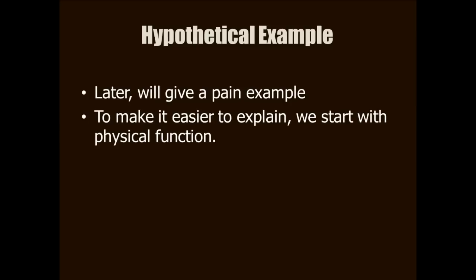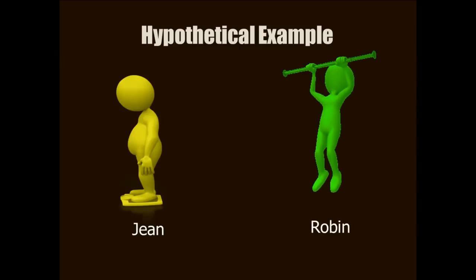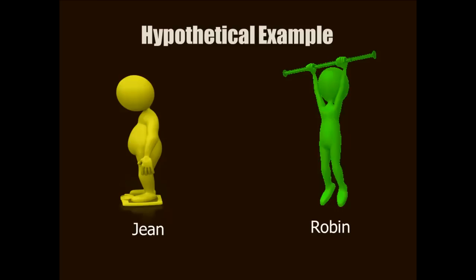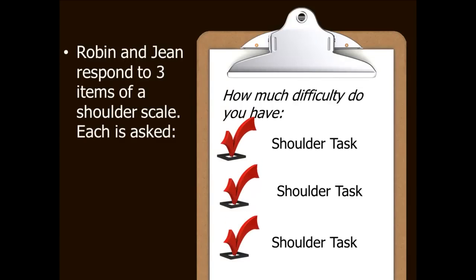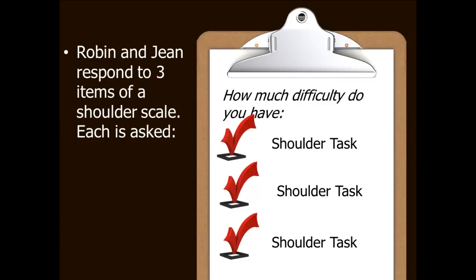I want to emphasize this point with a hypothetical example. This idea is easier to explain using the example of measuring physical function. For this example, I've created two androgynous, brightly colored people and named them Jean and Robin. We're going to measure their shoulder function. I've made up a shoulder scale that asks persons to report how much difficulty they have with different tasks, and the tasks require varying levels of shoulder function.